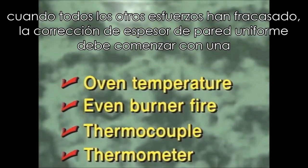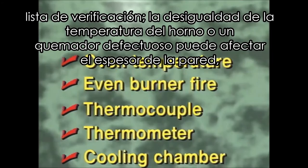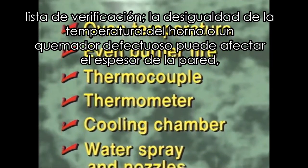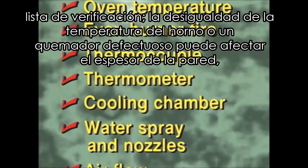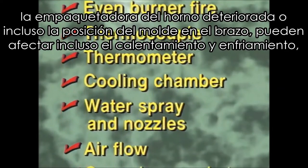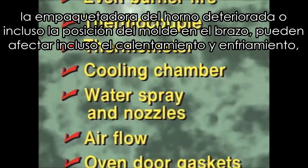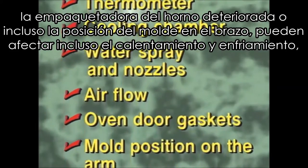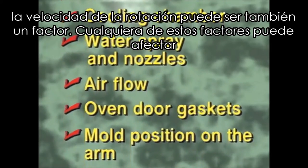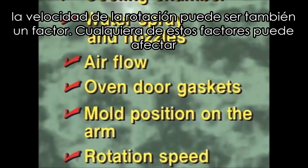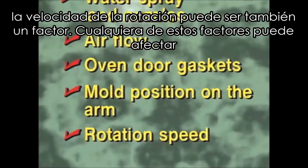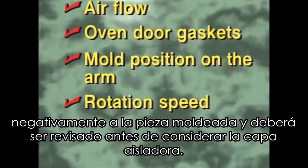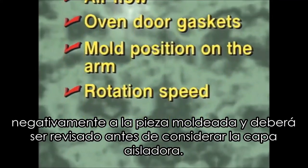Correcting uneven wall thickness should start with a checklist. Uneven oven temperature or a defective burner can affect wall thickness. Deteriorated oven gaskets or even the position of the mold on the arm can affect even heating and cooling. The speed of rotation can also be a factor. Any one of these factors can adversely affect the molded part and should be checked before considering shielding.